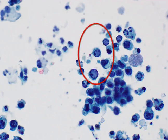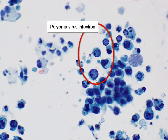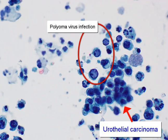Just to summarize, the features of polyoma virus infection include raised NC ratios, usually round nuclei with smooth nuclear membranes, and the presence of viral nuclear inclusions. Whereas in contrast, in cells of high-grade urothelial carcinoma, you will see more irregular nuclear membranes and coarser chromatin and sometimes prominent nucleoli. And also, don't forget to look out for mitotic figures.